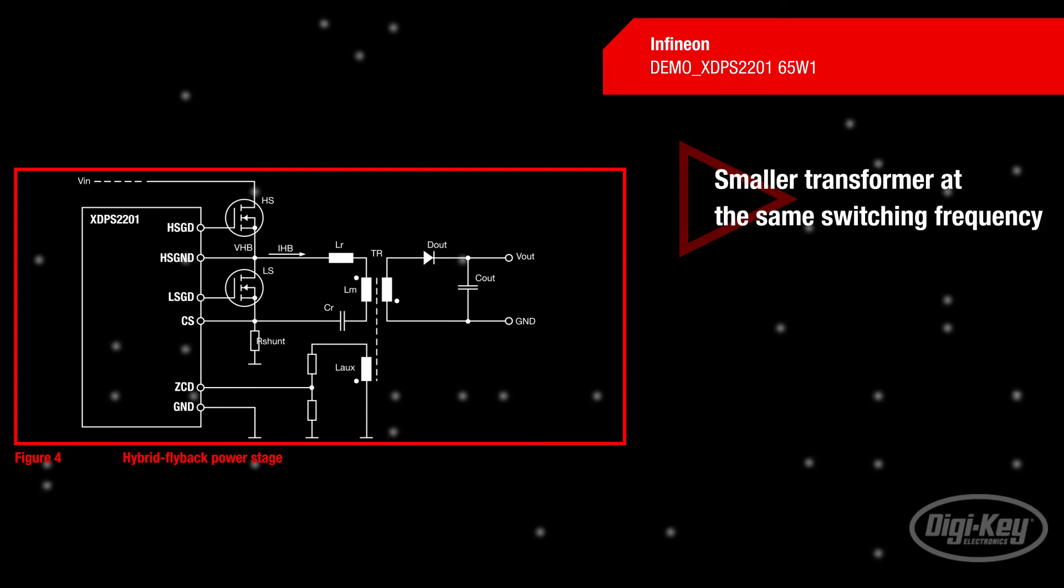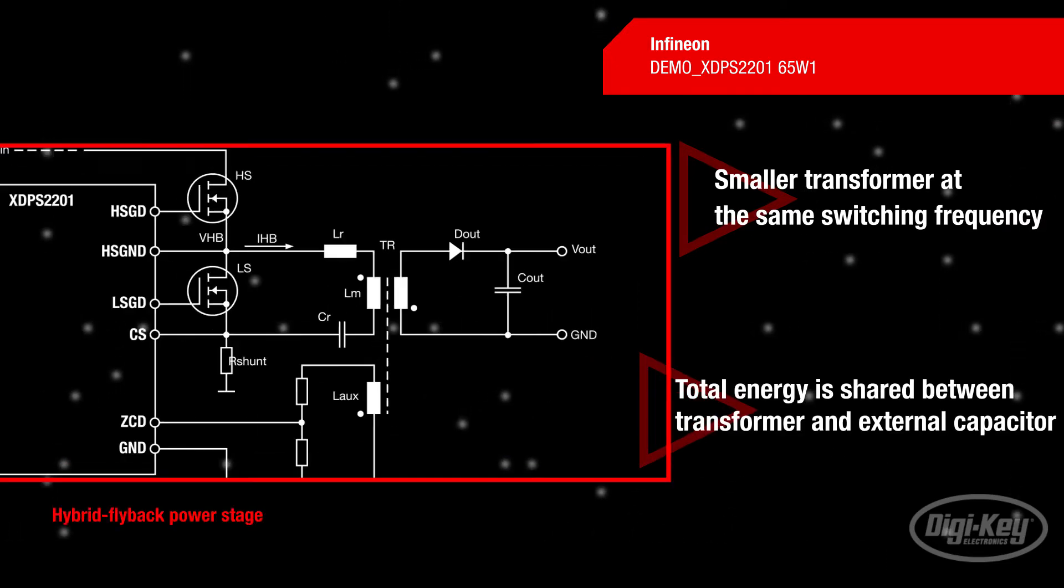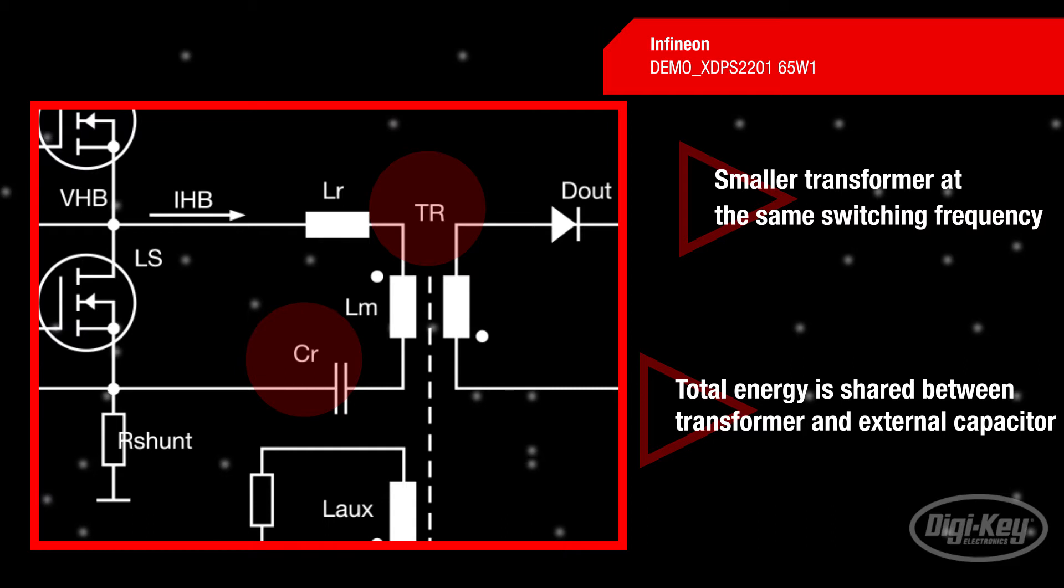The main advantage of this hybrid flyback topology is the extended energy storage approach, which enables the usage of a smaller transformer at the same switching frequency compared to the standard and active clamp flyback topologies.